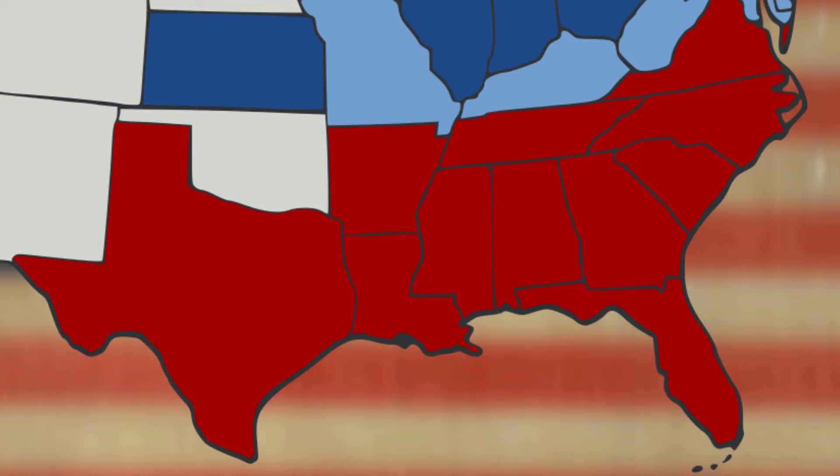The United States at the time of the Civil War had a total population of around 31 million people, with 22 million living in northern states and 9 million in southern states. It's important to note that of that 9 million, 4 million were enslaved people.